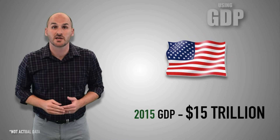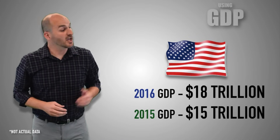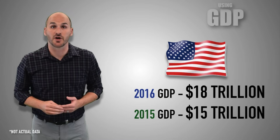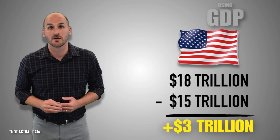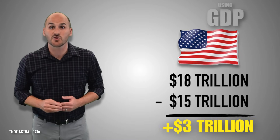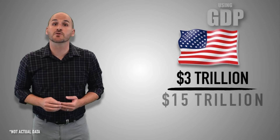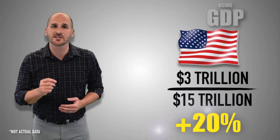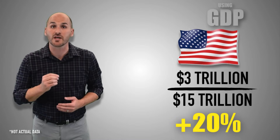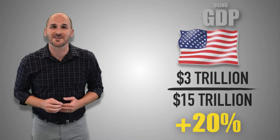For example, if the United States GDP in 2015 was $15 trillion and in 2016 it was $18 trillion, the GDP increased by $3 trillion in 2016. Because 2015 is the base year with a GDP of $15 trillion, that means the United States gross domestic product increased by 20% in 2016.